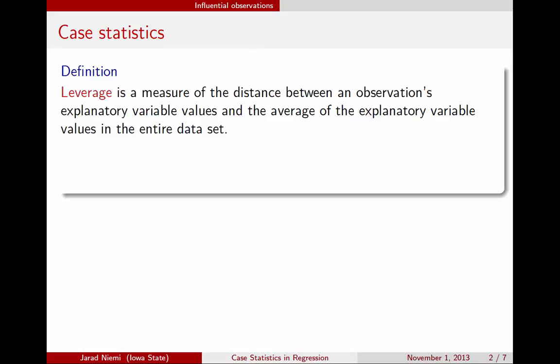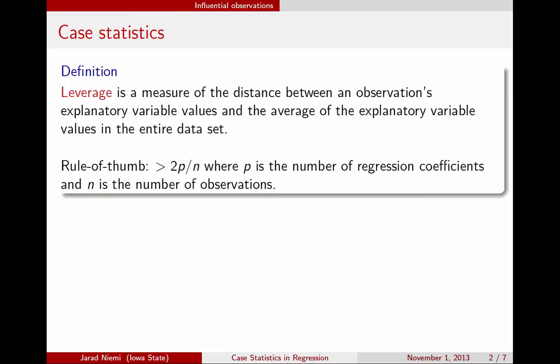A common question is how large leverage needs to be to be of concern. There's no hard and fast rule, but a general rule of thumb is that if the leverage exceeds 2p over n — where p is the number of regression coefficients and n is the number of observations — then you might be concerned that this point could have an impact on your analysis, or that the observation is outside the scope of the analysis.